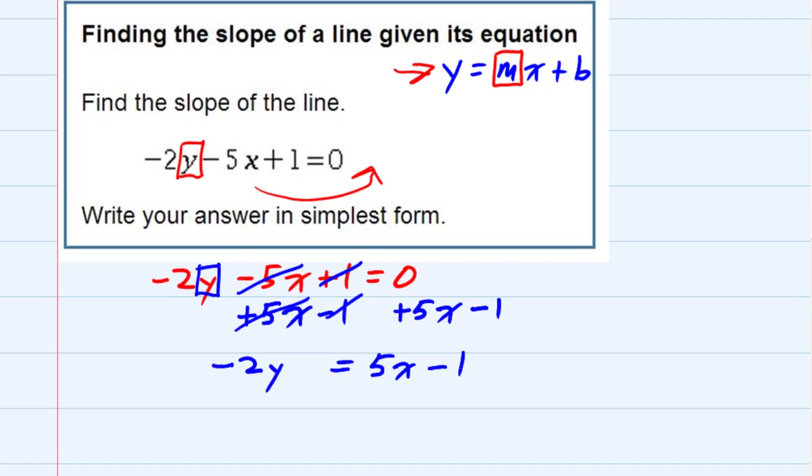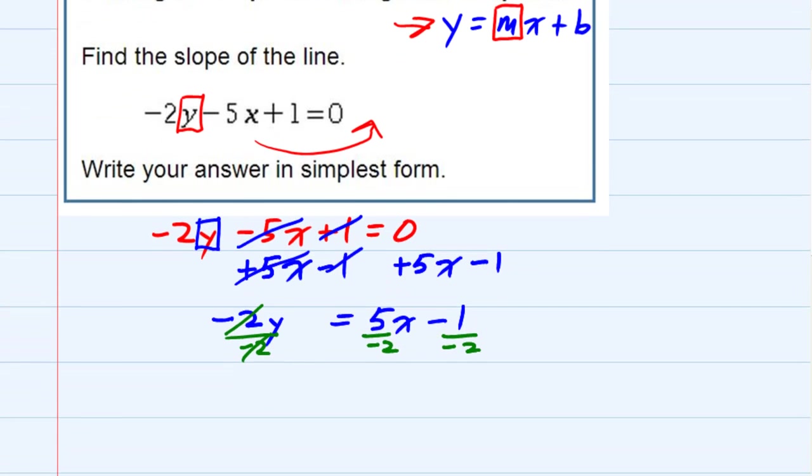And then lastly, I need to get rid of that negative 2. So we're going to need to divide everything on both sides by negative 2. That allows me to cancel the negative 2's on the left hand side.